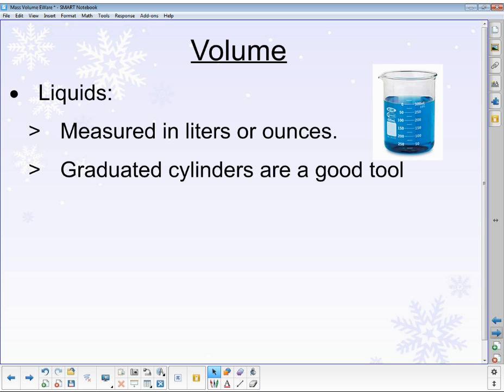Now at this irregular volume station, the idea of liquids is going to become important because liquids are measured in liters. Ounces would really be the English standard system, but remembering in science that we look at the SI units or the international system of units. So we won't be using ounces but we might be using milliliters or liters. Graduated cylinders are a good tool. Now what you have on the board here is not a graduated cylinder, that is a beaker. Don't get those too confused.